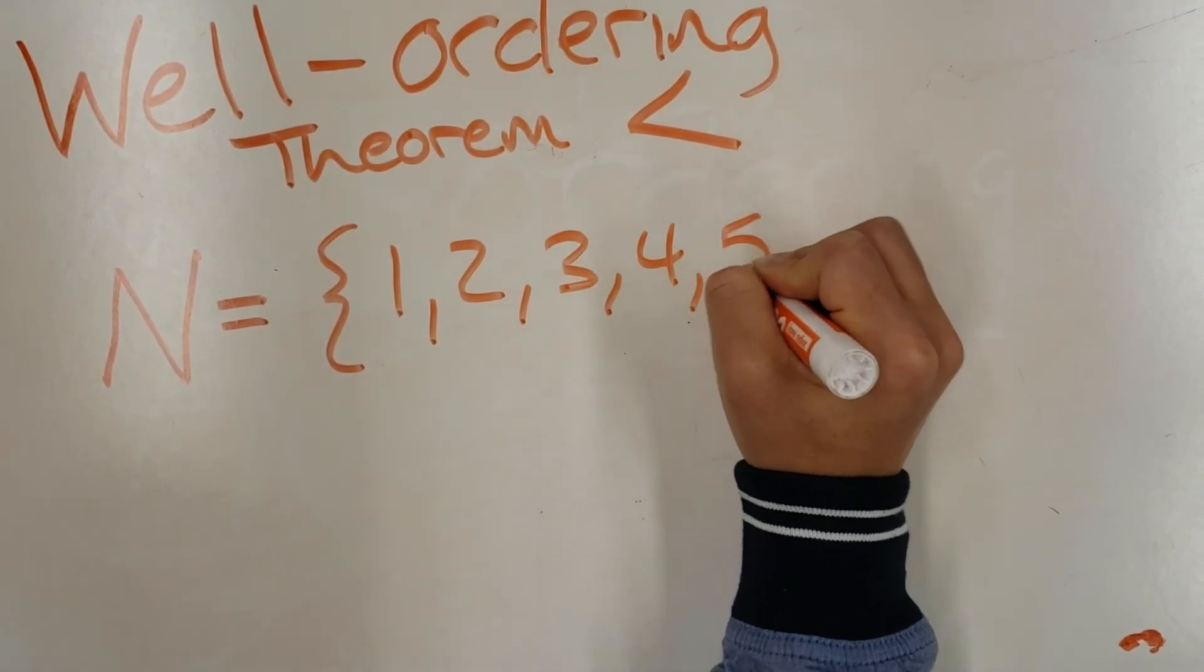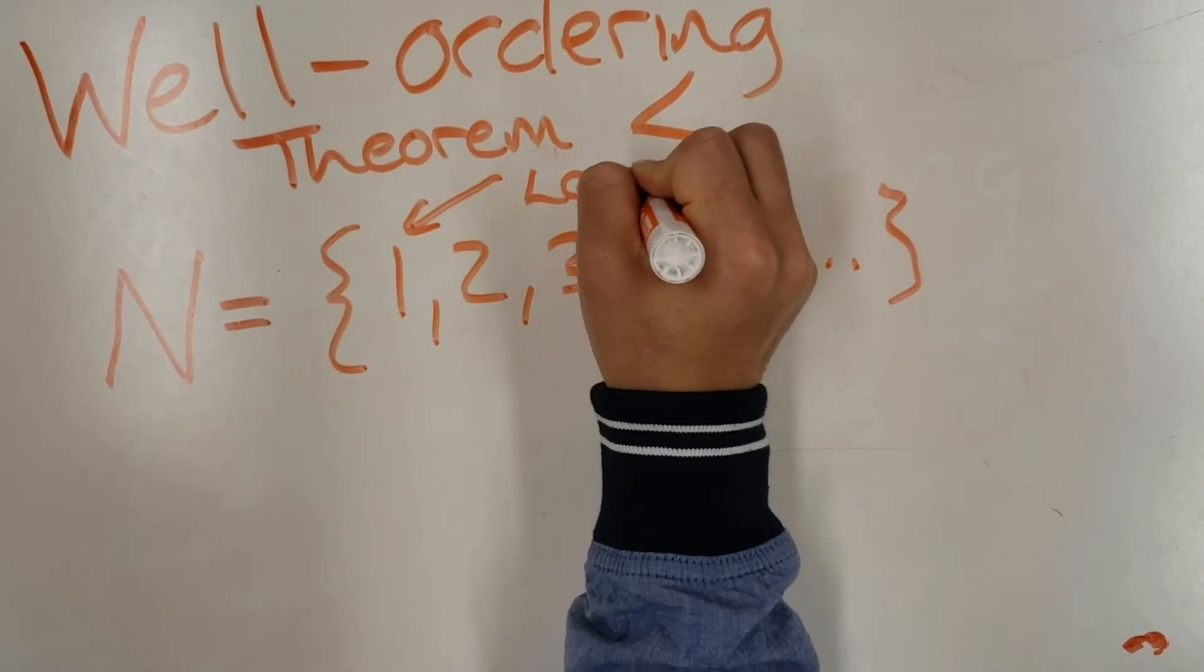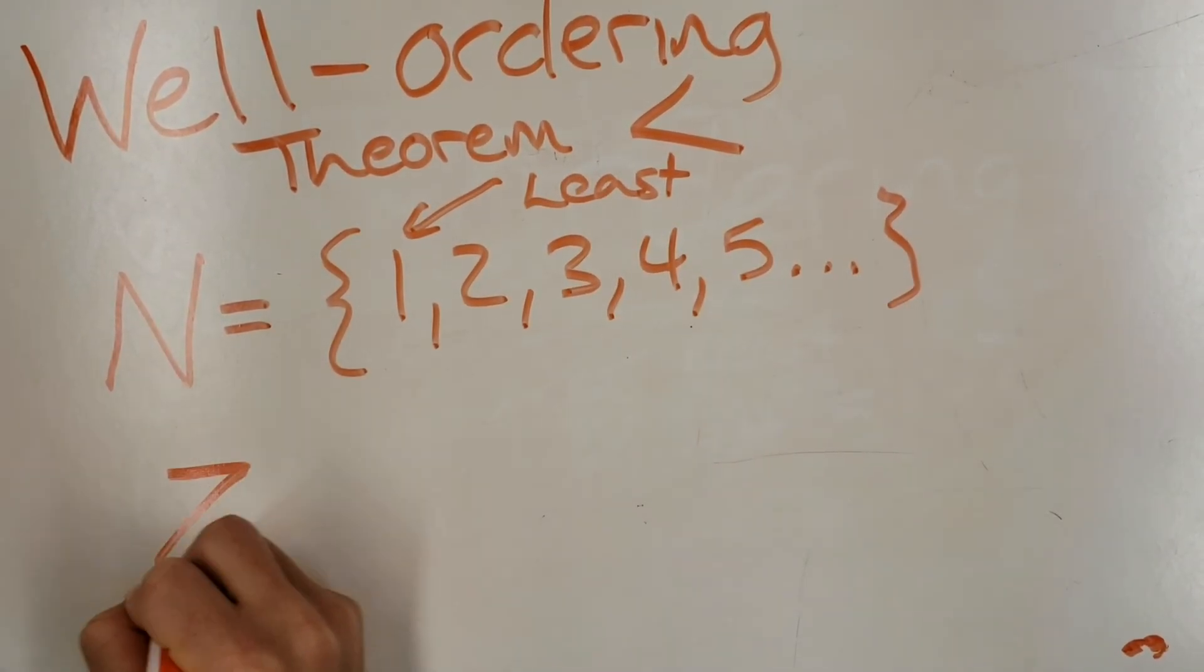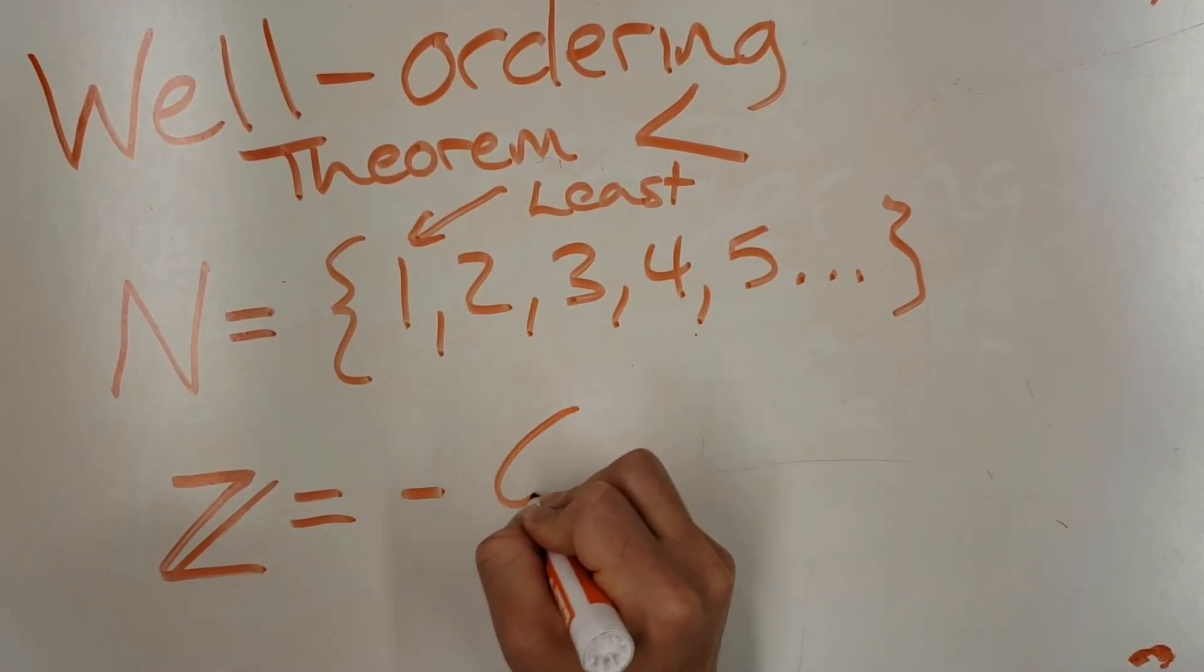But what about the integers? For them we can't use their natural ordering because that would never yield the least element. We would just keep going down and down towards negative infinity. Thus we have to define a different comparison in order to see the well-ordering of this set.